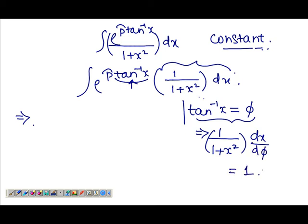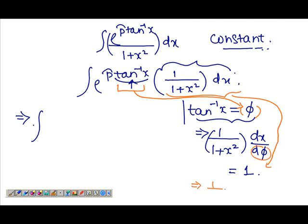So the integral, I'm going to just replace tan inverse x by phi, that's what I've taken it to be, and this whole thing by d phi. Just take d phi on the other side, you'll get 1 over 1 plus x squared dx equals to d phi. So replace this whole thing by d phi right there.